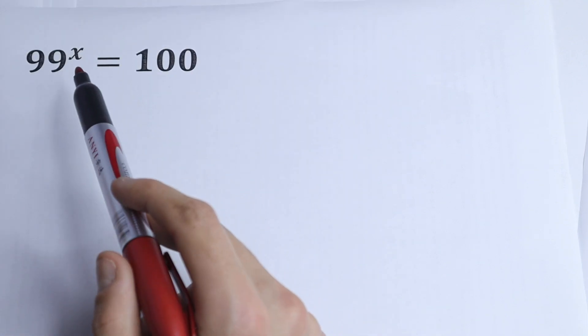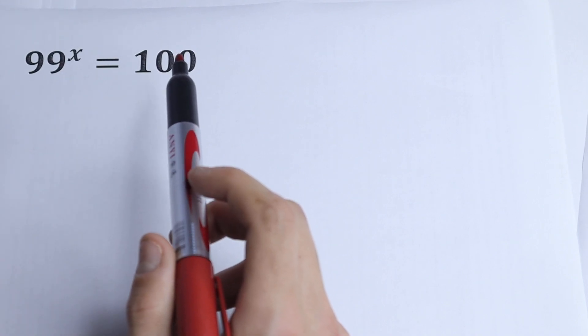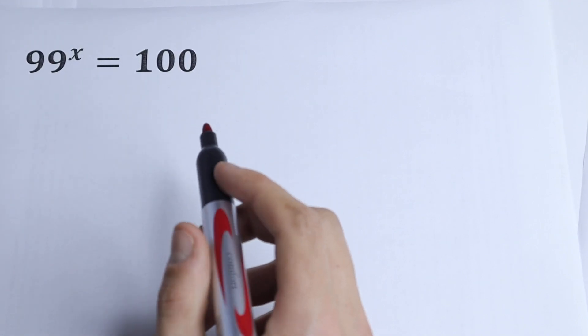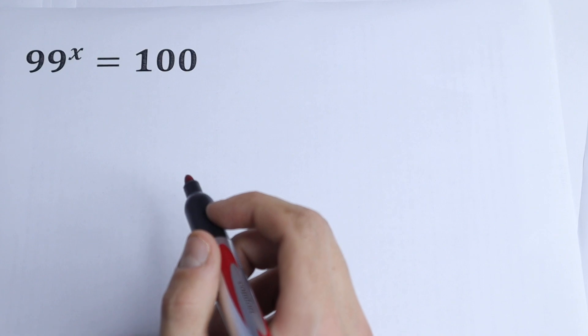Okay, we have 99 to the power x equals 100. So what rules do we need right here? First of all, we need to know what is log.